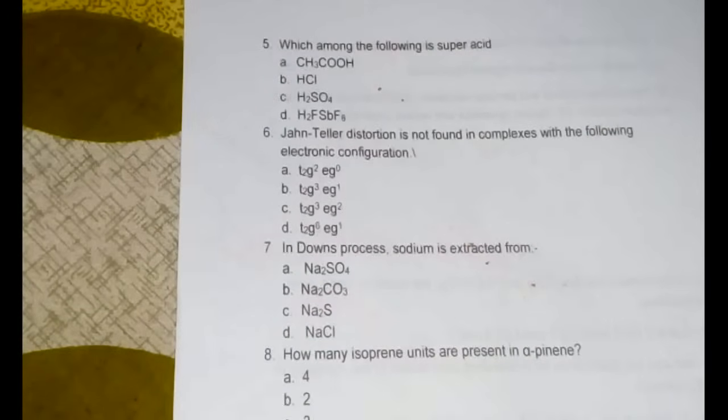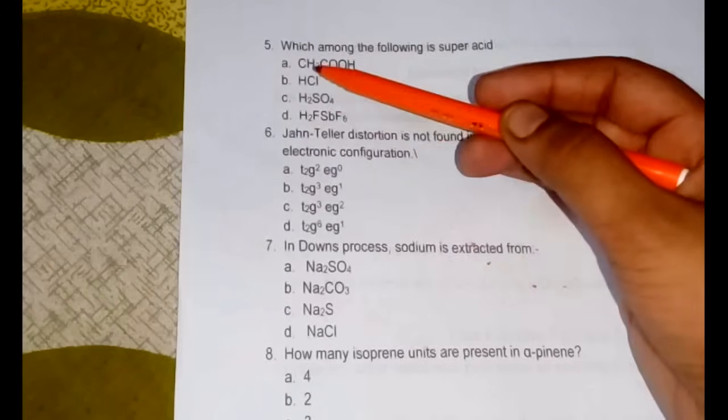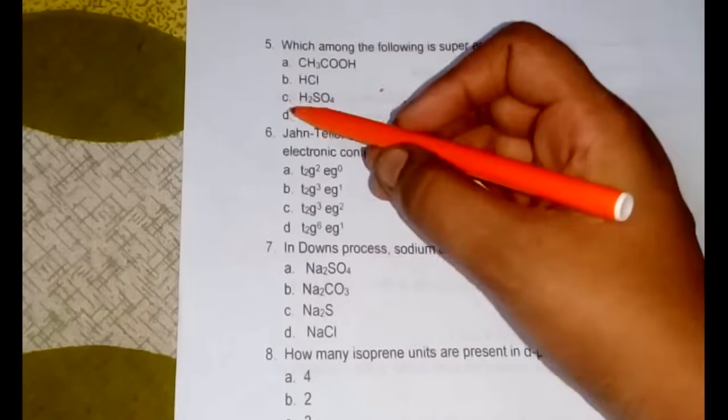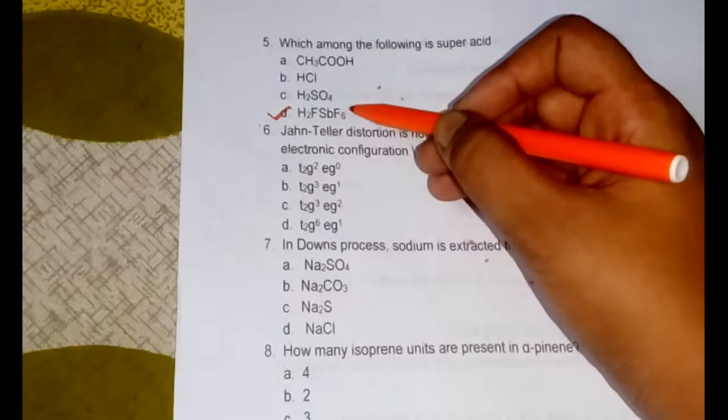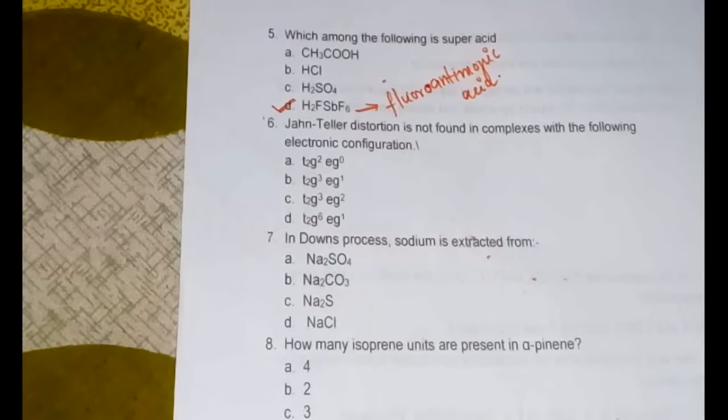Fifth question is which among the following is a super acid. A super acid is a substance which will be having acidity greater than 100% pure sulfuric acid. So definitely H2SO4 won't be the answer, HCl also won't be the answer, and CH3COOH also won't be the answer. So option D, HF·SbF6 which is also known as fluoroantimonic acid is the super acid. This is a typical example of a super acid. Most of the times you can expect this question in other entrance exams also.